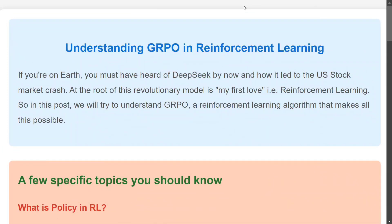Hi everyone, today we will be discussing a highly technical topic: the GRPO algorithm in reinforcement learning. We are discussing this because DeepSeek, a model released recently that has taken the generative AI world by storm, used the GRPO algorithm. This is the algorithm that contributed to the entire US market crash, so just imagine the power of an algorithm that can cause a stock market to crash. Today we will discuss how GRPO works and how it is used in DeepSeek.